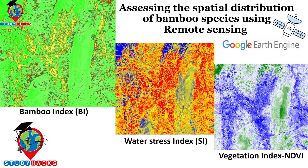I'll apply this algorithm step by step. First of all, we try to calculate the NDVI — mainly the vegetation index — and then we also try to calculate the water stress index. If you want, you can also use the soil moisture index. I will show you a step-by-step walkthrough of this algorithm and how we can use the Google Earth Engine platform to identify bamboo. So let's go.